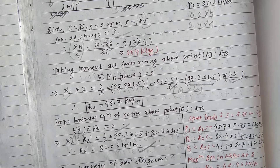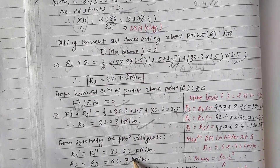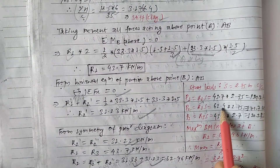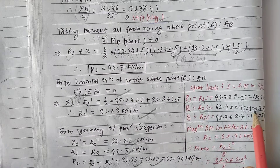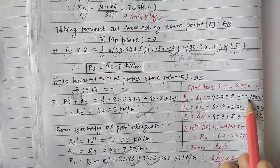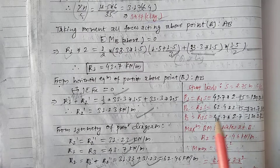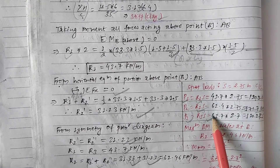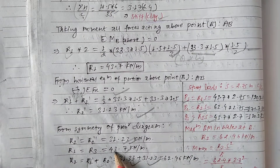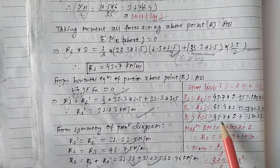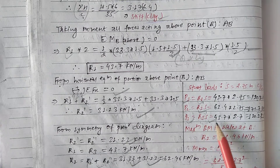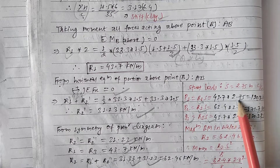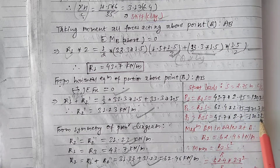R1 is 43.7, so this value is used, and R2 is equal to 37 — 62.4 into S. So we can see P1 value 120, P2 value 171, and P3 is equal to R3 into S. So R3 is equal to 43.7, and the spacing is 2.75.